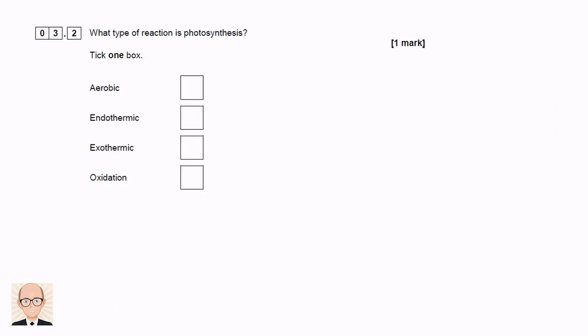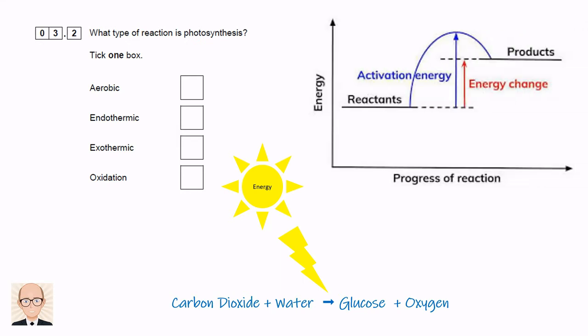This question asks what type of reaction photosynthesis is. We can choose from aerobic, endothermic, exothermic or oxidation. Let's look again at the reaction equation. We know that photosynthesis requires the energy supplied by light. So if we're supplying energy to the reactants as shown in the reaction profile, we can see that the products have a higher energy level than the reactants, which means the reaction must be endothermic. Energy is being taken in from the environment. Exothermic reactions, don't forget, release energy into the surroundings.